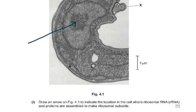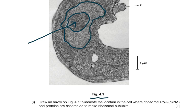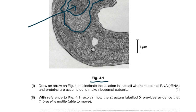Draw an arrow on figure 4.1 to indicate the location where ribosomal RNA proteins are assembled to make ribosomal subunits. If this is the nucleus, then this must be the nucleolus — the nucleus has a double membrane, a double nuclear membrane. Identifying the nucleolus gets you your one mark.